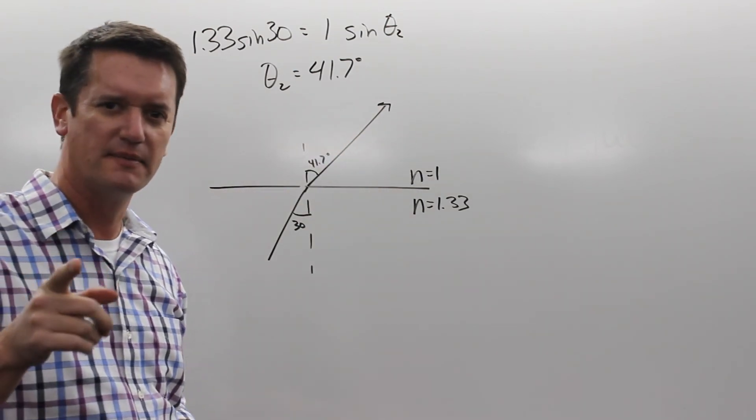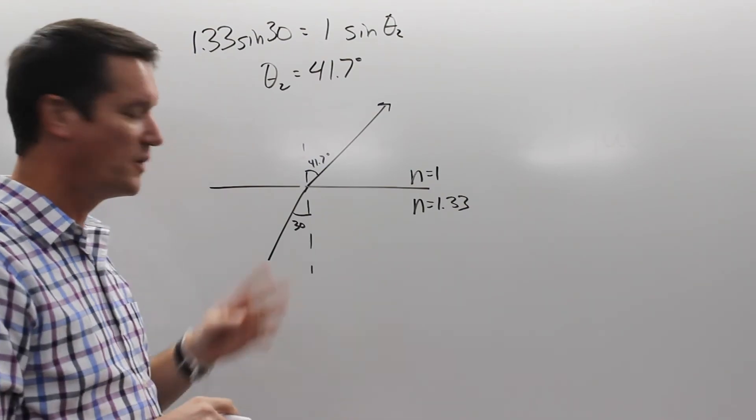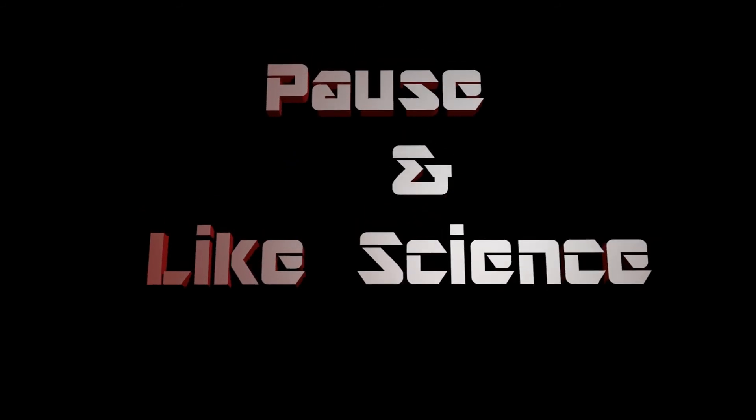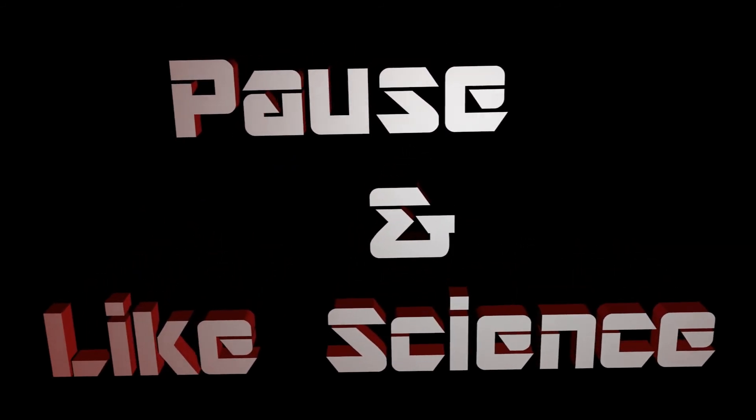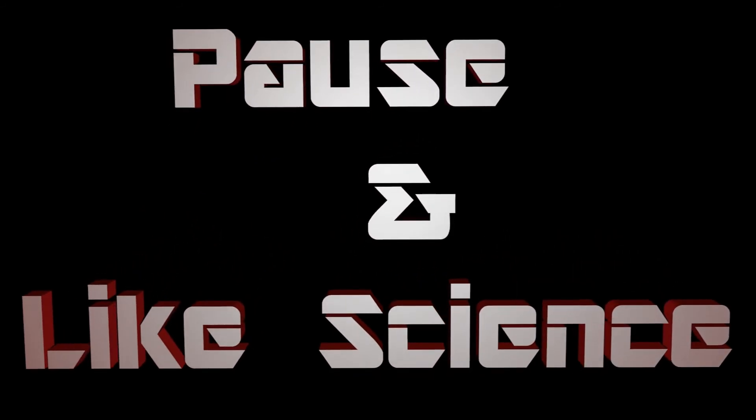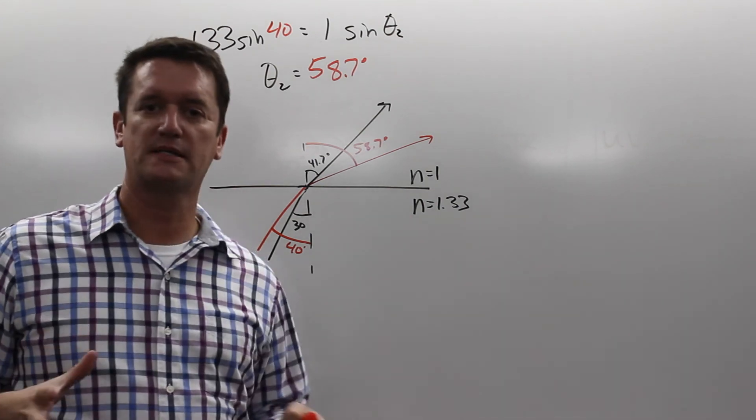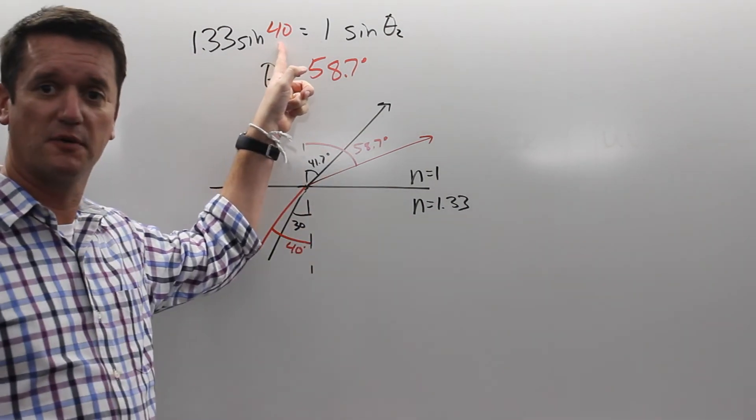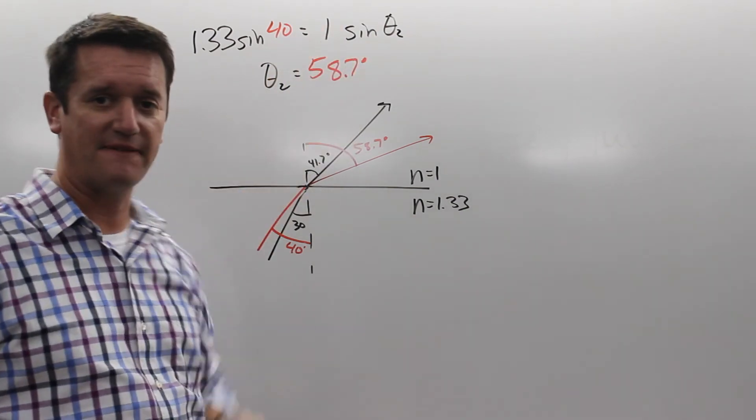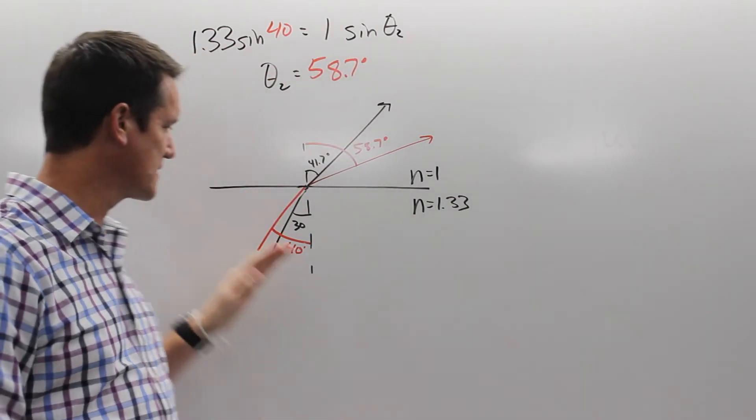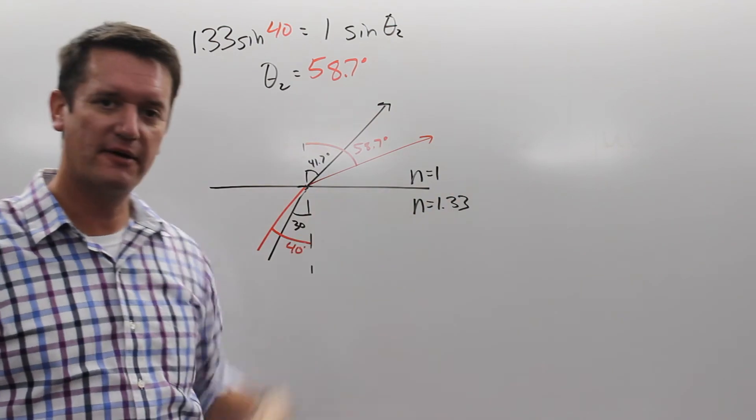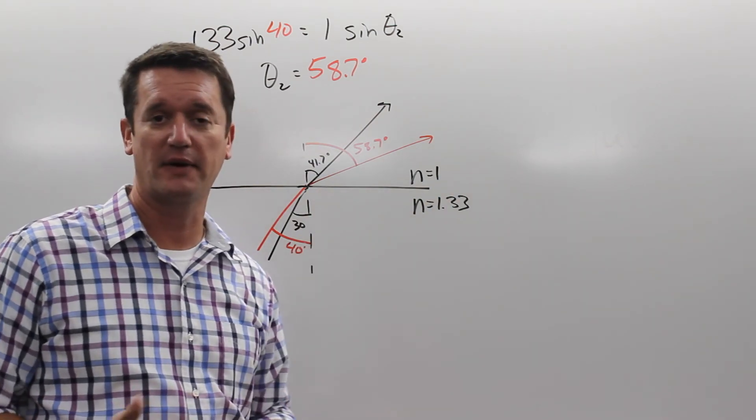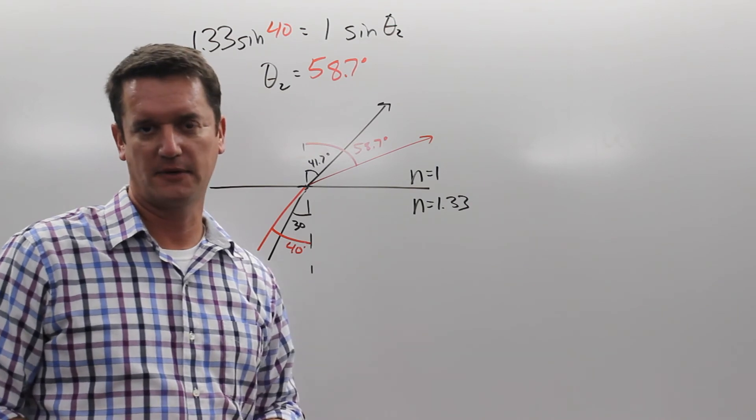Let's try another one. Do the same problem with 40 degrees. Looking at my scenario, it's pretty much the same thing. All I did was replace my 30 with 40, solve this thing out, I got 58.7 degrees. So you go in at 40, come out at 58.7, that's the red beam of light or ray of light on the board.